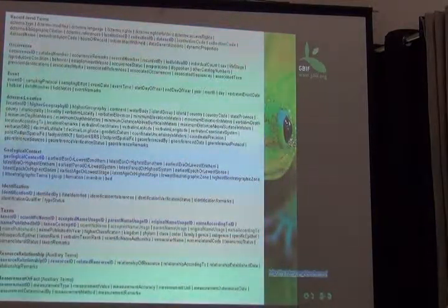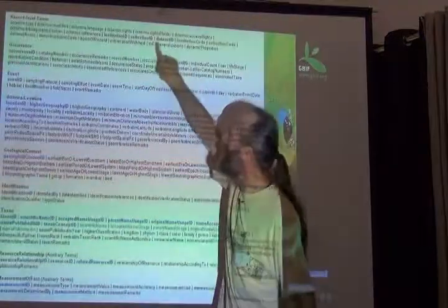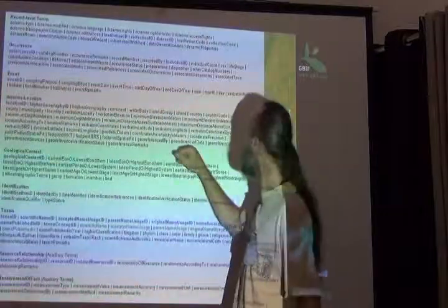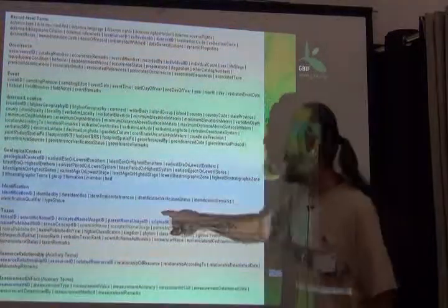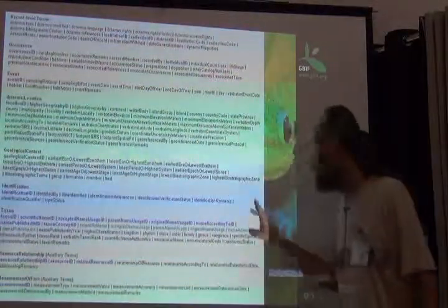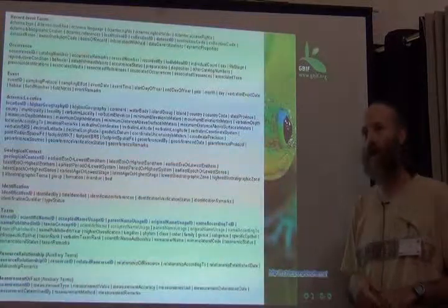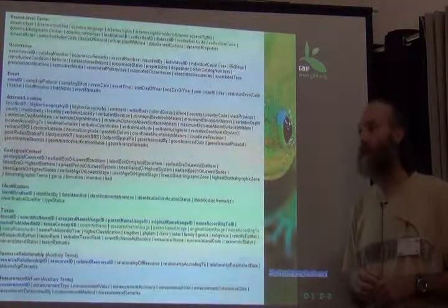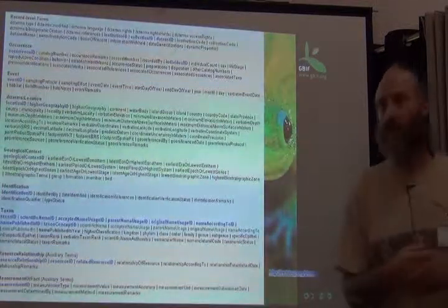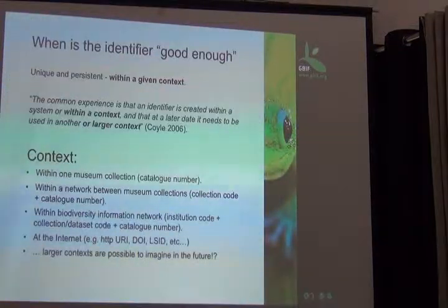This slide is meant for you to see highlighted in blue, throughout the whole list of Darwin Core terms, that identifiers appear in plenty of places. All those blue fields are identification fields in Darwin Core — they're meant to contain global unique identifiers. Darwin Core is very insistent on being able to share these.